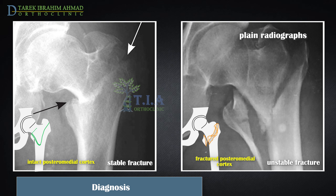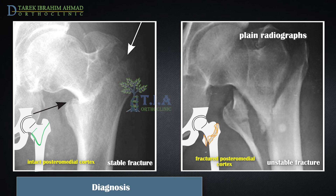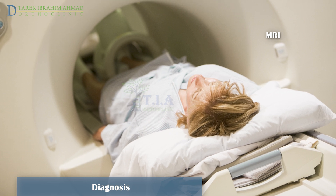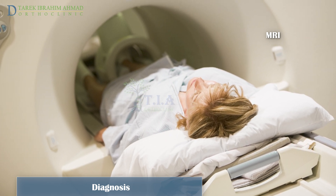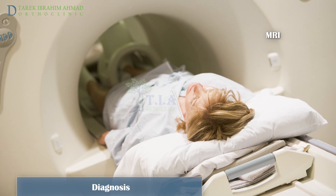Intertrochanteric fractures can be classified as stable or unstable. In stable fractures, the lesser trochanter is not displaced and there is no comminution. In unstable fractures, displacement occurs, comminution is present, or multiple fracture lines exist. If plain radiographs are unrevealing but pain is significant and clinical suspicion is high or the patient is at high risk, an MRI is needed.